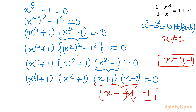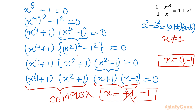From the remaining two factors x^4 + 1 = 0 and x² + 1 = 0 we will get complex solutions, because x^4 and x² cannot be negative for real numbers. So only 2 real solutions exist: x = 0 and x = -1. Let's now find the complex solutions.